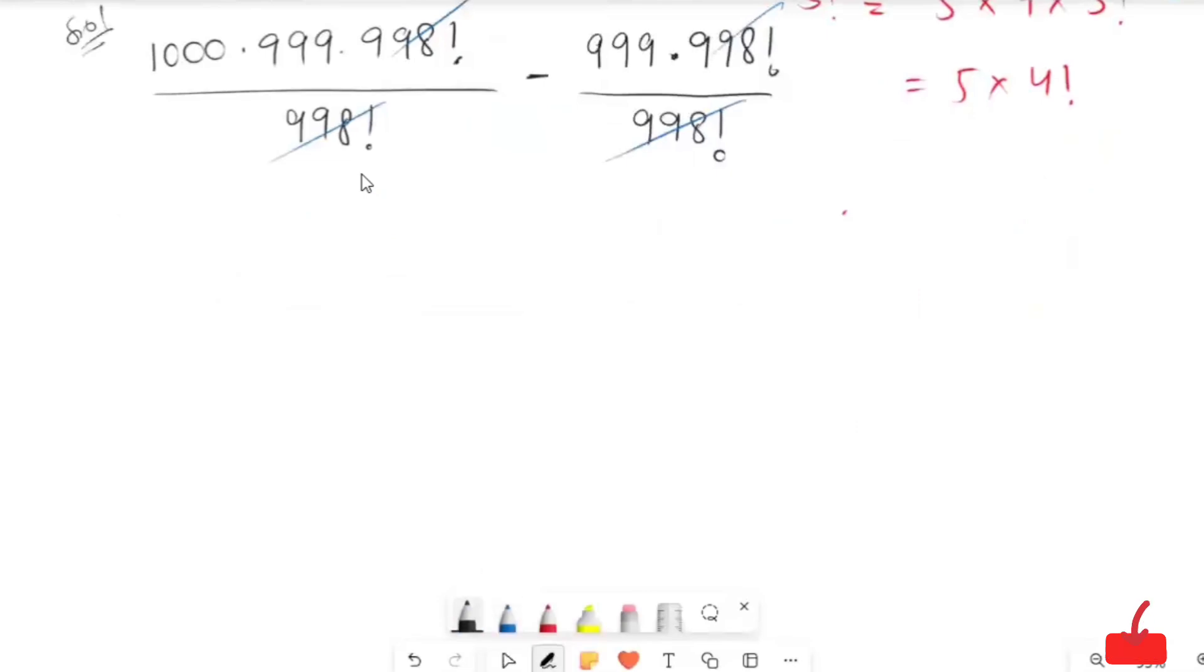1000 times 999 minus 999. Here I am going to take the common factor of 999 to get 999 times 1000 minus 1.